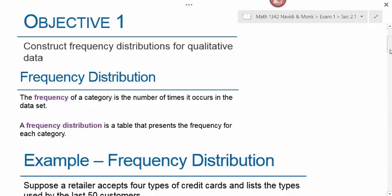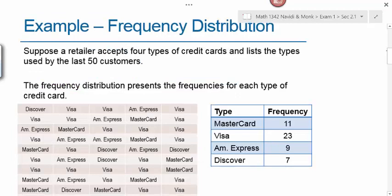Objective one is to construct frequency distributions for qualitative data. The frequency of a category is the number of times it occurs within a data set. A frequency distribution is a table that organizes that data and presents the frequency for each category. So here's an example of a frequency distribution.